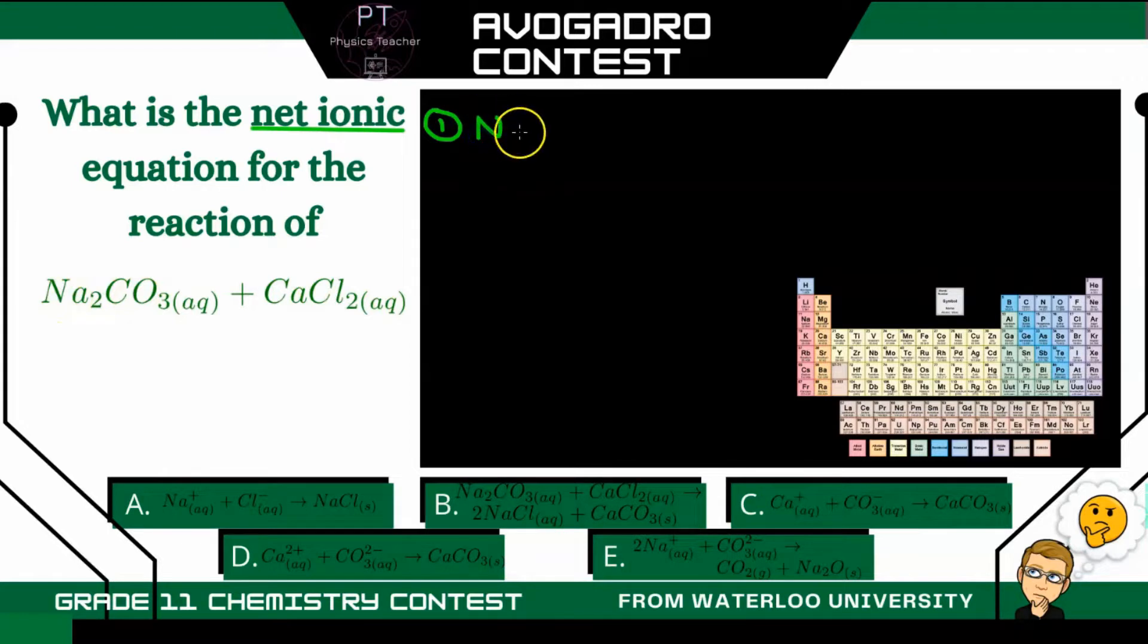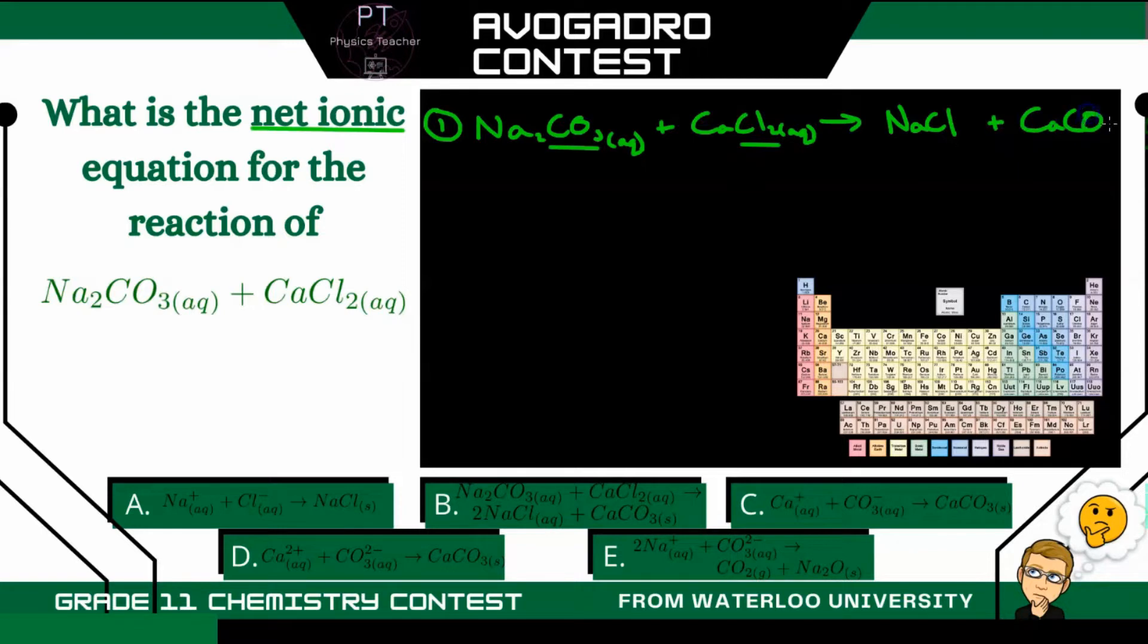So we have sodium carbonate, which is in an aqueous solution, plus calcium chloride, which is also in an aqueous solution. Now this is going to be a double displacement reaction, where carbonate and chloride are going to switch places. So we're going to end up with sodium chloride, which is NaCl, plus we're also going to end up with calcium carbonate, which is CaCO3.